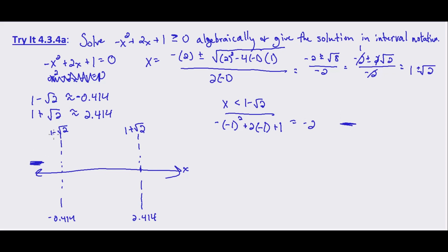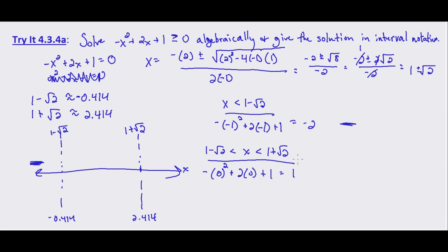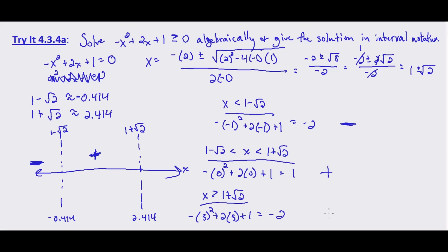Between 1 minus root 2 and 1 plus root 2, we test x equals 0: negative 0 squared plus 2 times 0 plus 1 equals 1, which is positive. For x greater than 1 plus root 2, we test x equals 3: negative 9 plus 6 plus 1 equals negative 2, which is negative.